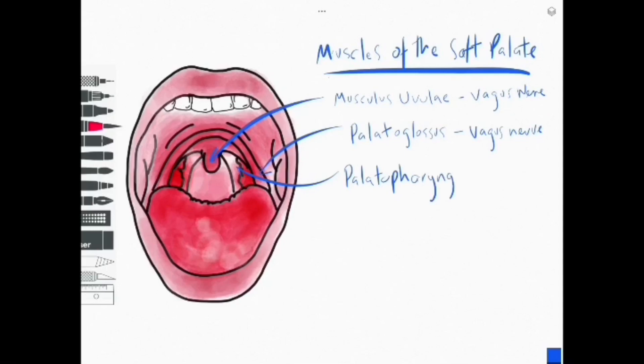The palatopharyngeus is a muscle also innervated by the vagus nerve. It depresses the soft palate, moves the palatopharyngeal arch forward from the midline and elevates the pharynx.